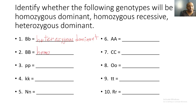For number two, we have two capital B's — they're the same, so it's homozygous. And since they're two capital B's, they're dominant, so it's homozygous dominant. You now have one minute to complete problems three through ten.